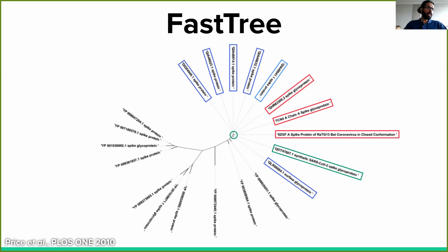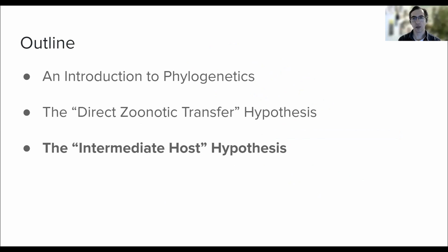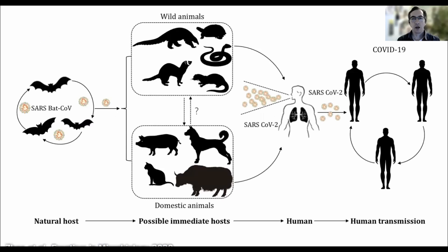In the following section, we shall explore yet another theory for the origin of this virus. The last hypothesis we will explore is the intermediate host hypothesis. Having completed our analysis in the preceding section, you may deduce that the currently available data seem to align well with the direct zoonotic transfer hypothesis. However, there are also researchers who look at the same data and believe that it supports another theory, the intermediate host hypothesis.